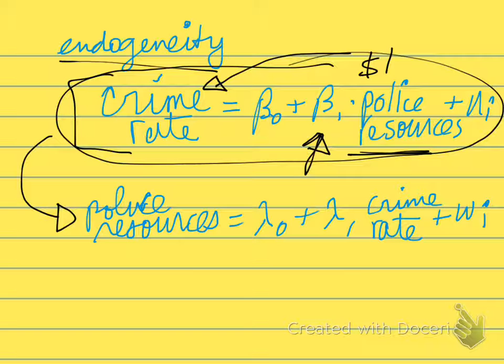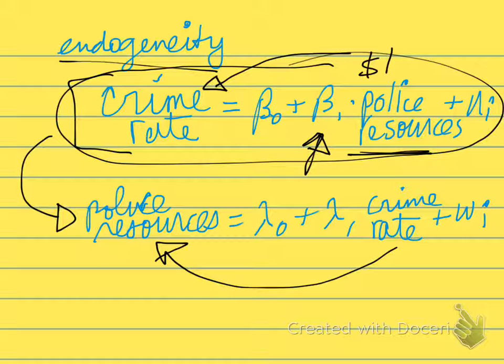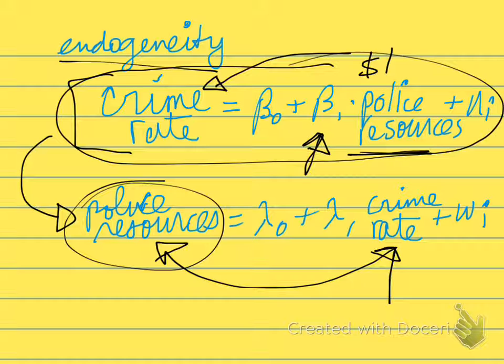That is that the crime rate is what causes police to get more resources. So the amount of resources that police have is a political outcome between the voters and the council members and the city council.